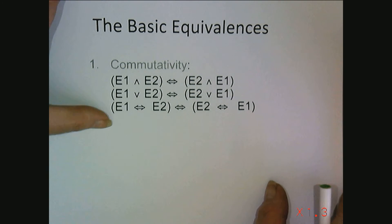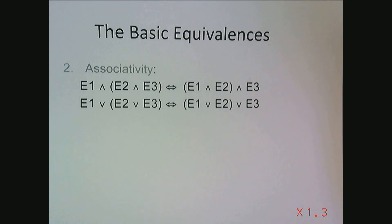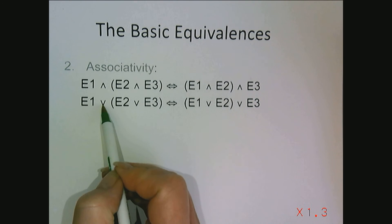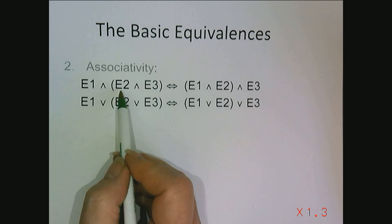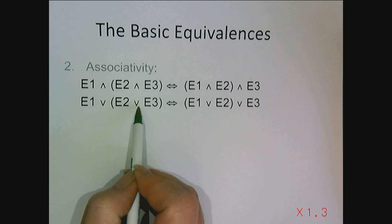So let's look at another of the basic equivalences. That's associativity. Conjunction and disjunction are associative. That means that the grouping isn't important. If we have a string of conjunctions or a string of disjunctions, we don't really need parentheses.